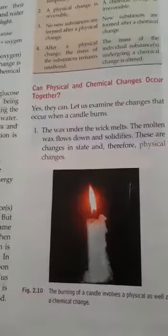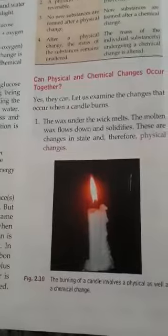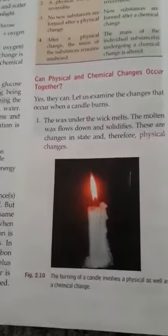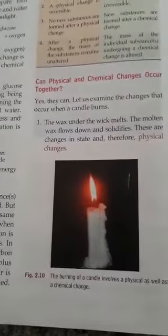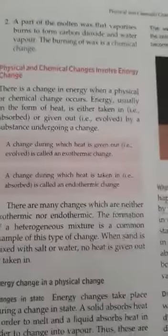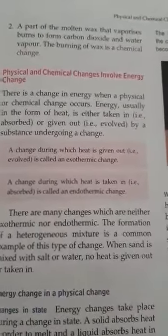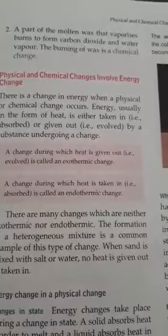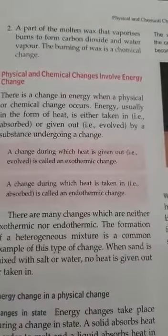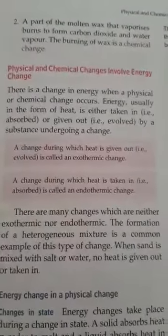The wax under the wick melts. The molten wax flows down and solidifies. These are changes in state and therefore examples of physical change. A part of molten wax that vaporizes burns to form carbon dioxide and water vapor. So, burning of wax is an example of chemical change.